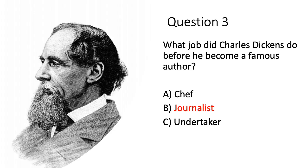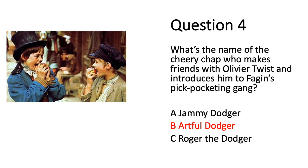Question three was about Charles Dickens. What job did he have before he became a famous author? He was actually a journalist and worked for a few newspapers. Question four: what was the name of the cheery chap who makes friends with Oliver Twist? It was the Artful Dodger. Obviously, a jammy dodger is a type of biscuit that you eat.